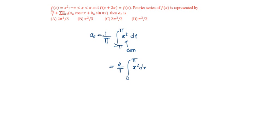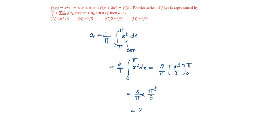That is equal to 2 by pi, x squared integration is x cube by 3, with limits from 0 to pi. That is equal to 2 by pi into pi cube by 3, which gives 2 pi squared by 3. The answer is option A.